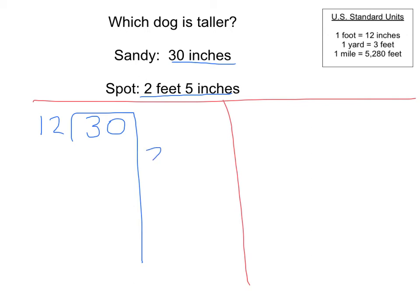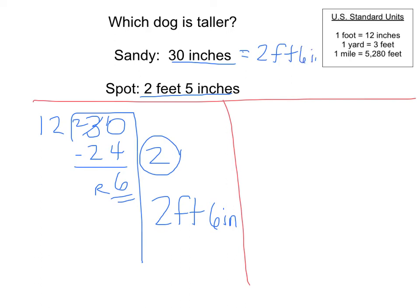And let's see, I can do two groups. 24. So that means that there are 2 feet, and this is my remainder. 2 feet 6 inches is the same thing as 30 inches. This equals 2 feet 6 inches. Now I know right away that that's 1 inch taller than Spot. But I'm going to just show you one other way to solve, even though we know that Sandy is the taller dog.